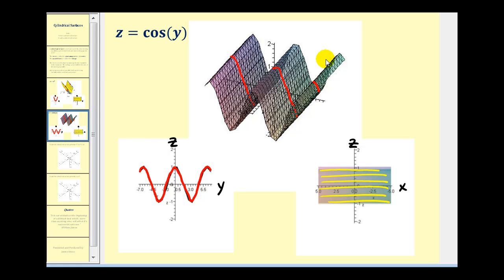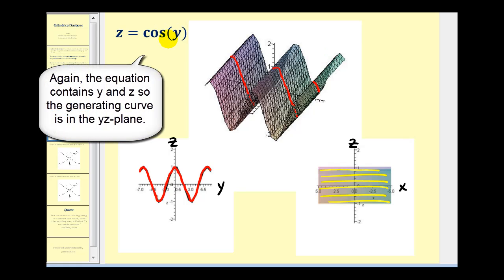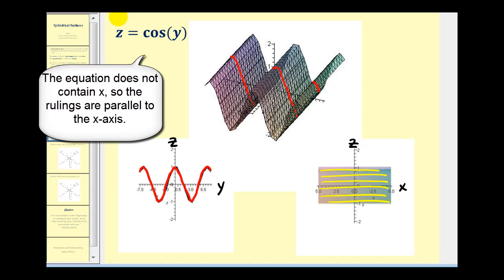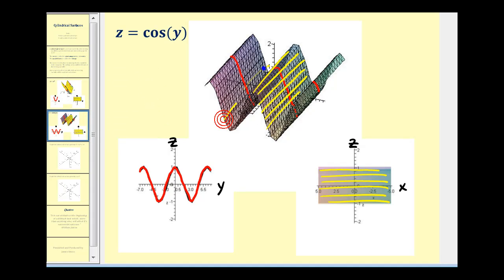Here we have the graph of z equals cosine y. Looking at the graph of this just in the yz plane, we have this red graph. If we graph this in the xyz coordinate system, it becomes this three-dimensional surface. The generating curve is this red curve in the yz plane, and the rulings would be the set of parallel lines in the xz plane that intersect this generating curve, and they would look something like this. These lines actually make up the entire cylindrical surface.